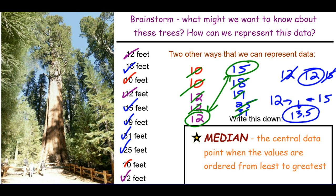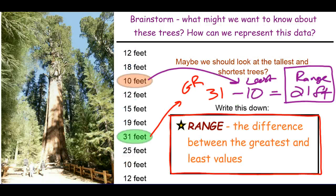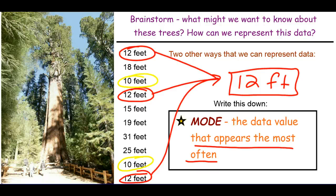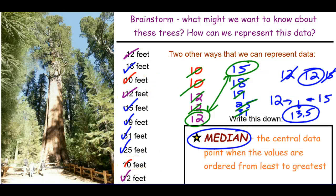Pause the video and write down the definition of median. To recap: the range is the difference between the greatest and least values; the mean is the average value — find the sum and divide by the number of data points; the mode is the value that appears most often; and the median is the center value when you order the points from least to greatest.